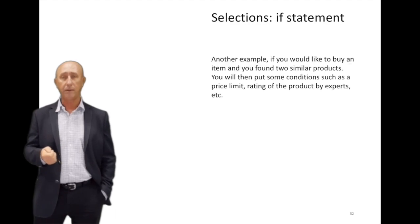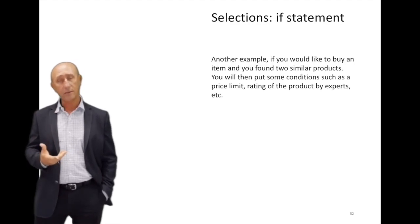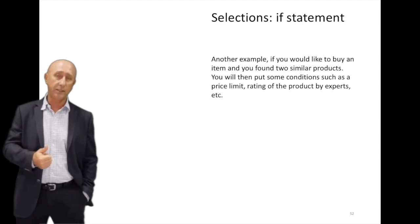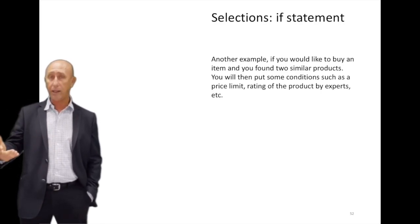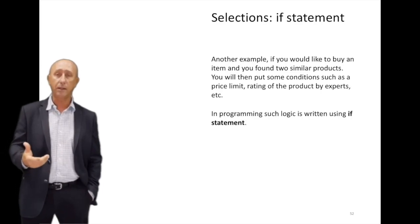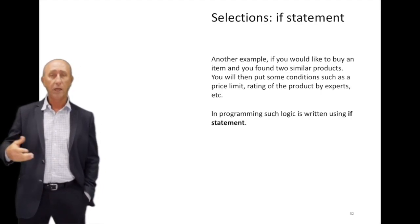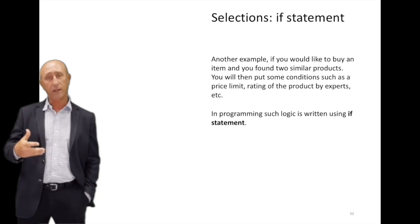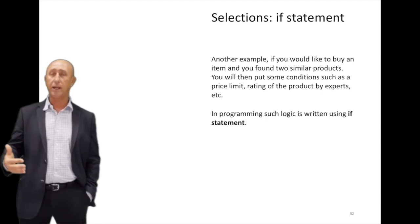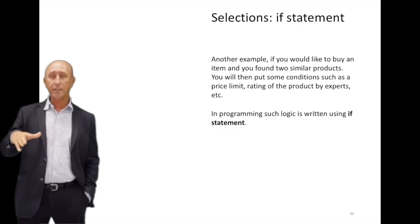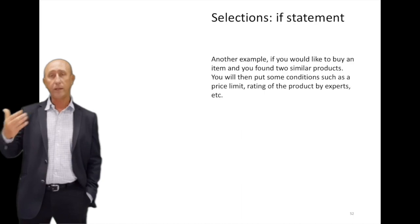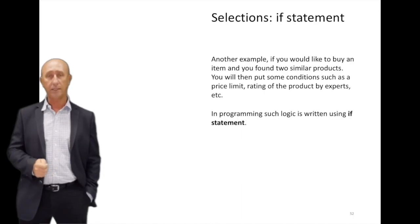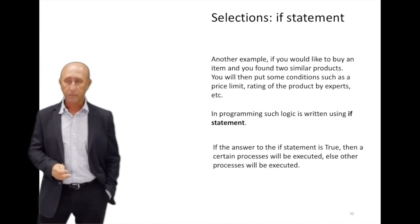Here's another example: if you'd like to buy an item, you're making a decision. Does the price make a difference to you? If the price is correct, you buy. Is the quality important to you? You check the rating of the product. Again, you're making decisions on a regular basis, and how you translate these decisions into your program is what we're going to show you in this video.